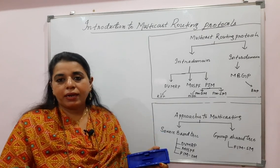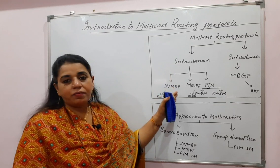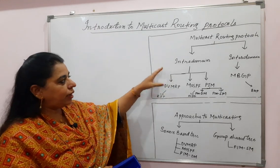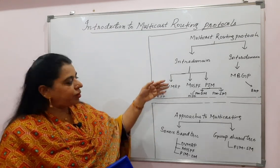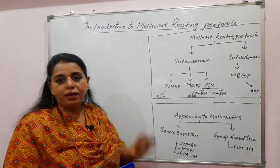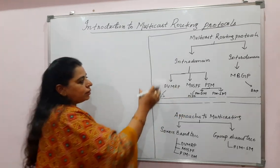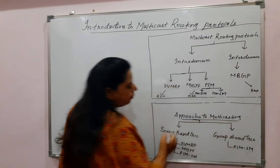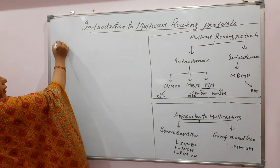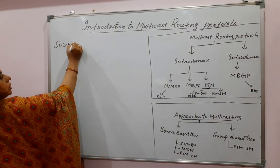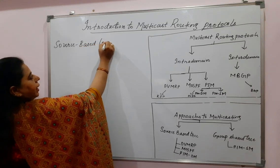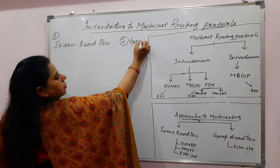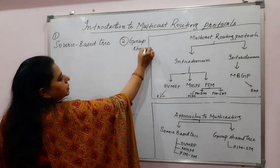Similar to unicast routing classification, this is the classification for multicast routing protocols. I have given this classification diagram to help students see the connection between different topics in the textbook. The next part you need to know is the approaches to multicast routing. We have two approaches: the source-based tree approach and the group shared tree approach.